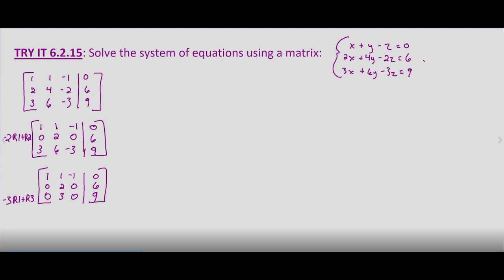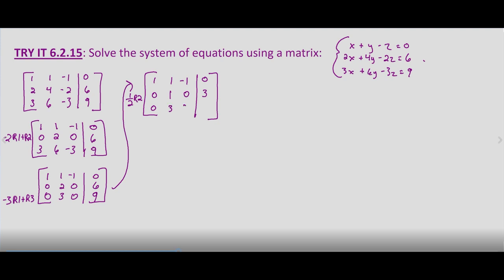We've got one in the top left and zeros below it. Our next step is to move on to the second column — we want the second row, second column to be a one. So how do we make that two a one? We multiply by one half. Our first row remains the same: one, one, negative one, zero. For the second row, one half times row two gives us zero; two times one half is one; zero times one half is zero; and six times one half is three. Our third row remains the same: zero, three, zero, nine.